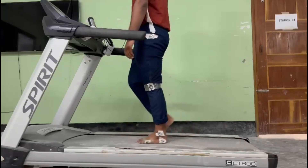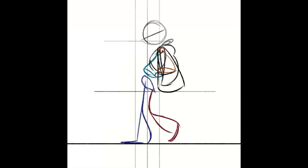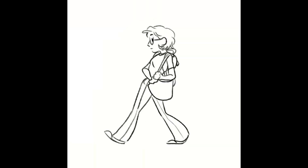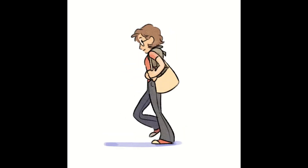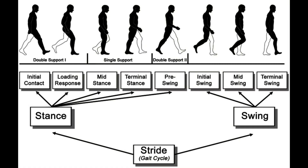Gait is the normal walking pattern followed by an individual. Basically everybody has a different gait pattern. The gait is mainly divided into two main phases: stance phase and swing phase. Stance phase is again divided into five sub-phases called initial contact, loading response, mid stance, terminal stance, and pre-swing. Swing is subdivided into three sub-phases called initial swing, mid swing, and terminal swing.